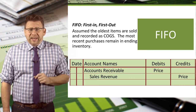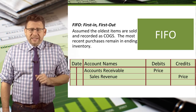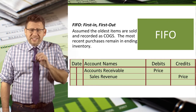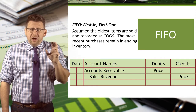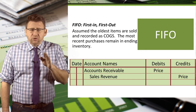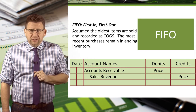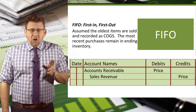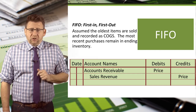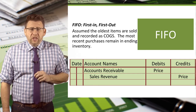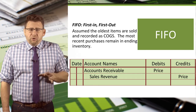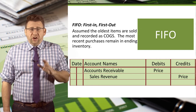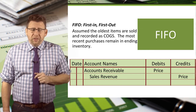Recall that under the periodic inventory tracking system, we don't track the purchases and sales of inventory through the inventory account. So the revenue entry is all that is recorded when the sale occurs. Therefore, cost of goods sold and ending inventory valuation are determined only at the end of the month.